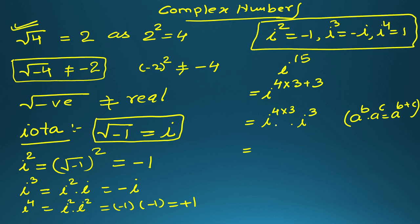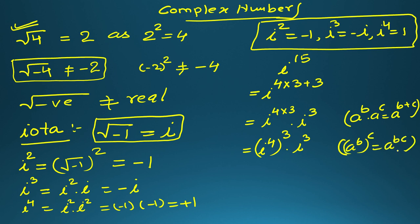Using another property of powers and exponents, it can be written as (i to the power 4) to the whole power 3, times i cubed — using the property (a^b)^c equals a^(bc). Now, i to the power 4 equals 1, so 1 to the power 3 times i cubed equals 1 times minus i, which gives minus i. That is the answer.